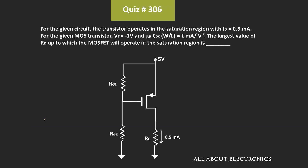Hey friends, welcome to the YouTube channel All About Electronics. In this question, we have been given a transistor circuit and we have been asked to find the maximum value of Rd such that the MOSFET will still operate in the saturation region.